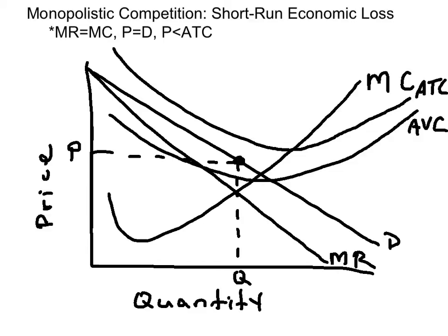Here is a firm that is minimizing its economic losses. First, we draw our axes — price and quantity — then a downward sloping demand curve, and a downward sloping marginal revenue underneath the demand curve. We draw in our marginal cost curve, and then we put in our average cost curves.